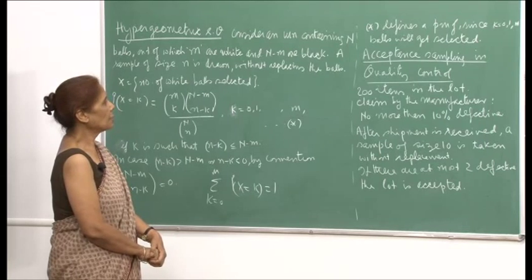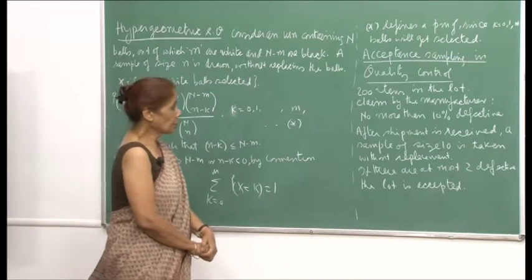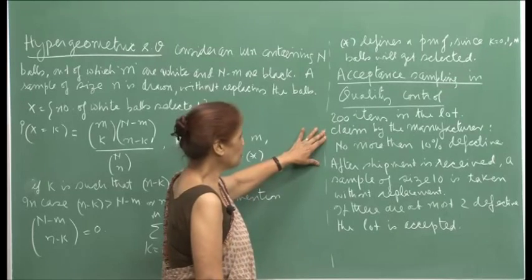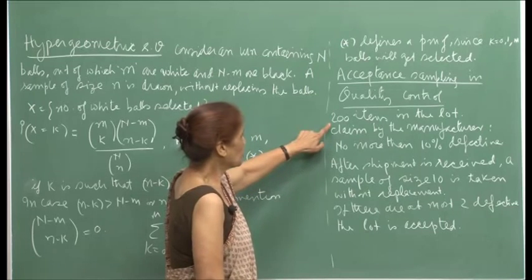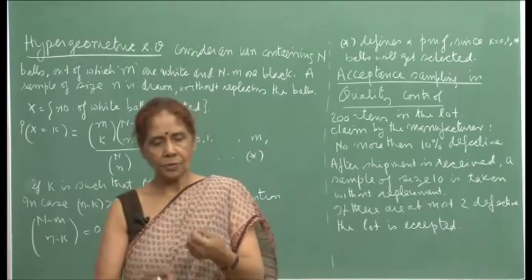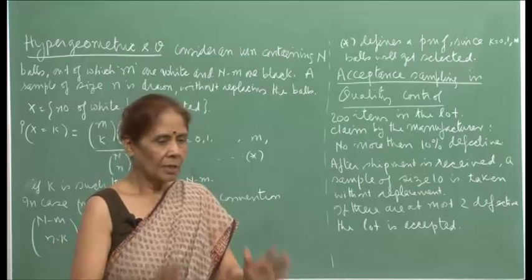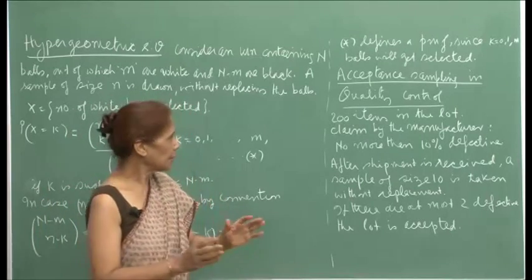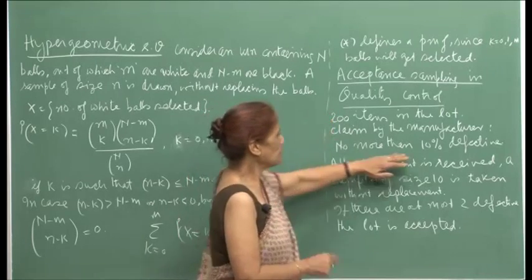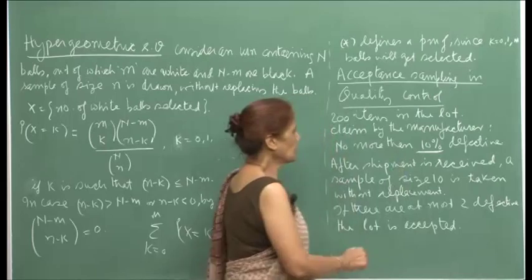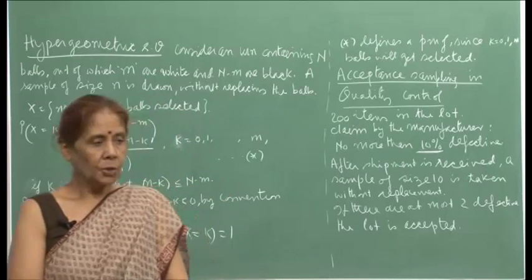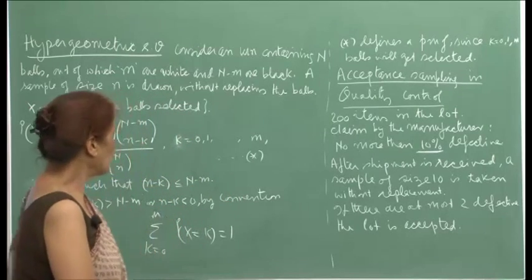An example of where we make use of the hypergeometric random variable is acceptance sampling in quality control. Suppose there are 200 items in a lot being delivered by a manufacturer, and the claim by the manufacturer is that no more than 10 percent are defective. People do not have time and manpower to actually inspect all 200 items.